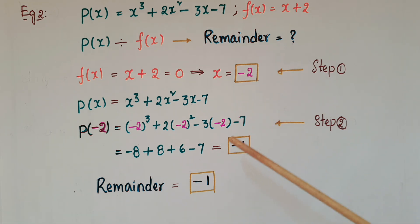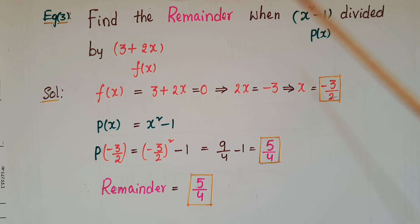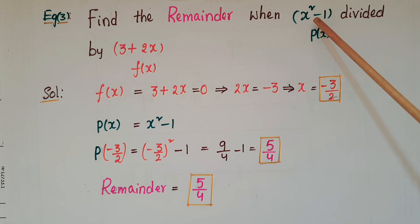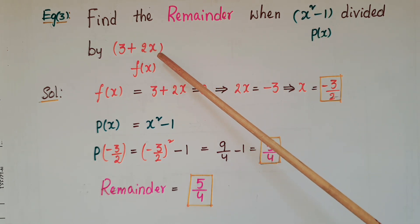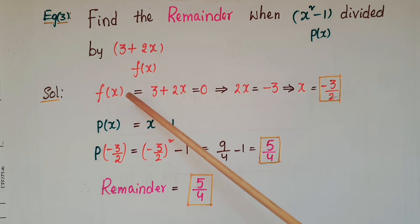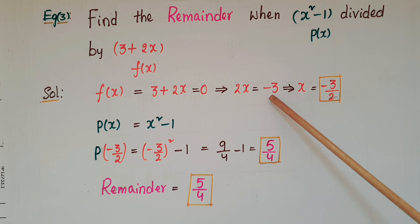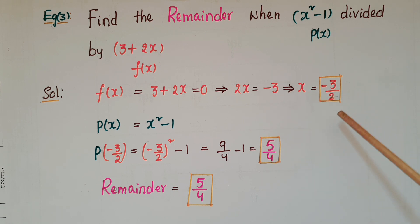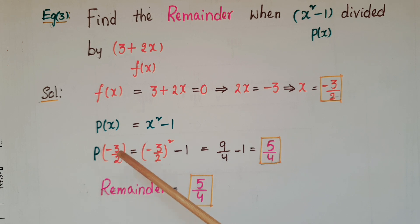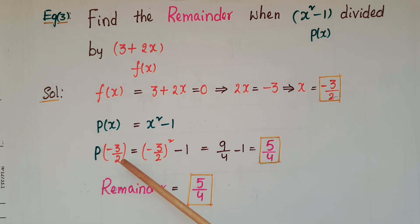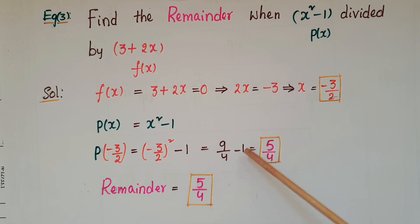This is another example: find the remainder when x² - 1 is divided by 3 + 2x. Here p(x) = x² - 1 and f(x) = 3 + 2x. Make f(x) = 0: 3 + 2x = 0, so 2x = -3 and x = -3/2. Calculate p(-3/2): (-3/2)² - 1 = 9/4 - 1 = 5/4. So the remainder is 5/4.